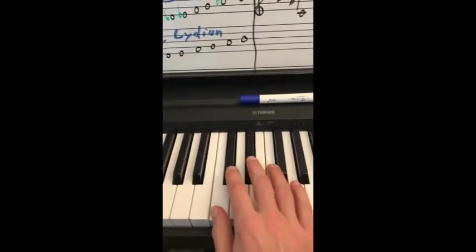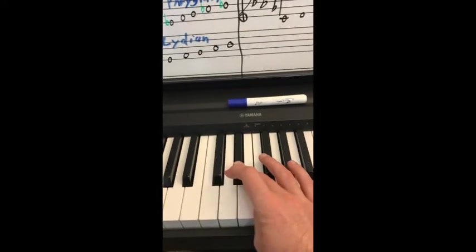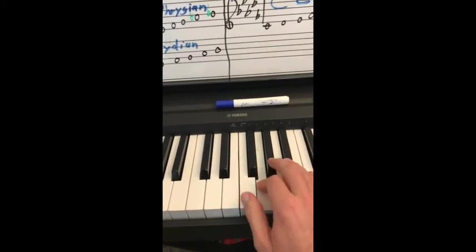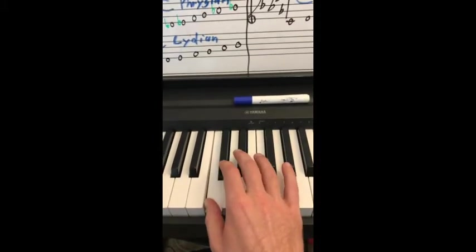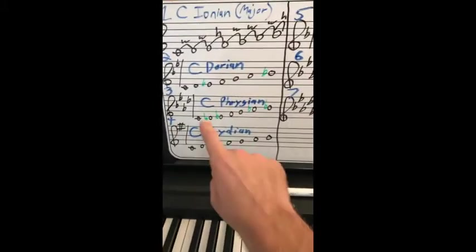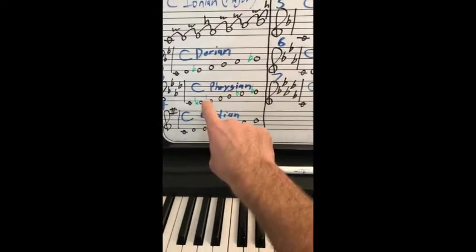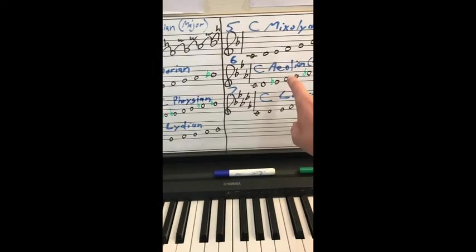So, four flats. We play that. So, Phrygian. People say what's like minor, but with a flatted second. So, it's even darker than natural minor.